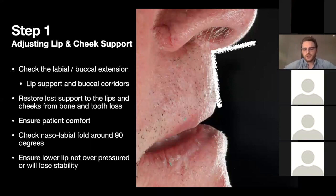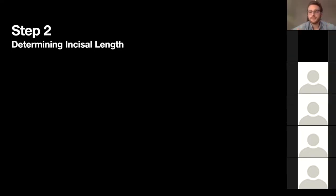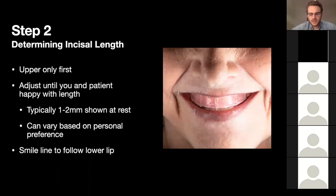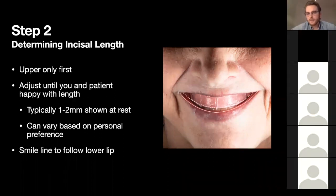Once the lip support is set, remove the lower rim and work with just the upper rim to determine incisal length — how long the teeth are and how much tooth shows at rest and when smiling. The upper denture is for beauty; the lower is for function. Typically you want around one to two millimeters of tooth showing at rest, though this depends on the patient's age and personal preference. Check that the smile line follows the lower lip for a natural-looking smile.